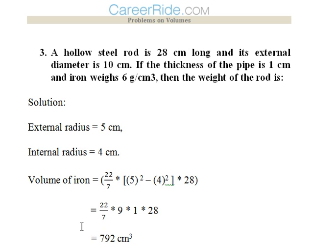Now the third question. A hollow steel rod is 28 cm long and its external diameter is 10 cm. If the thickness of the pipe is 1 cm and iron weighs 6 g per cubic centimeter, then what is the weight of the rod? Now first,